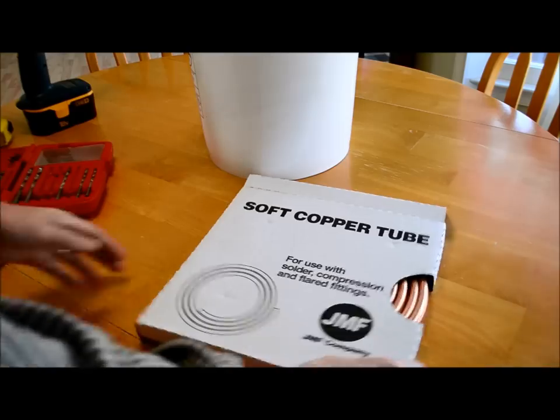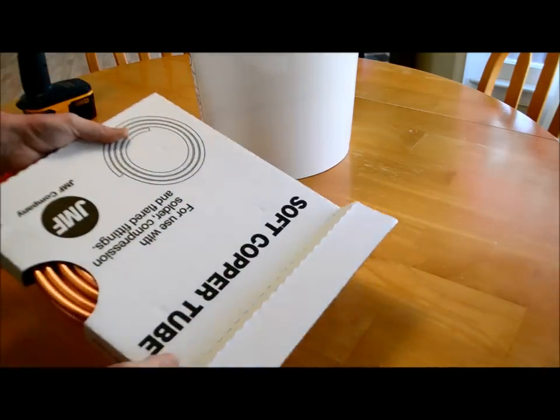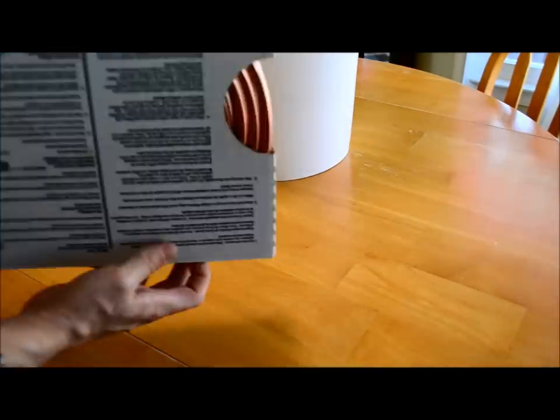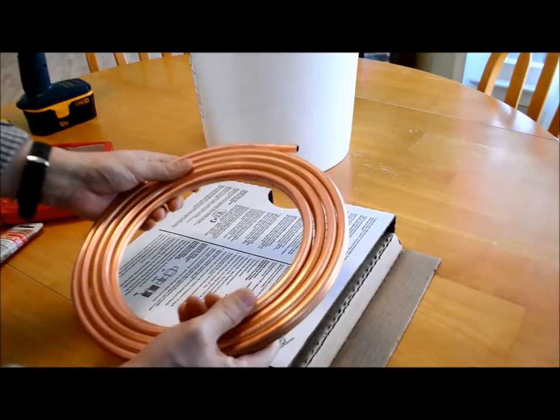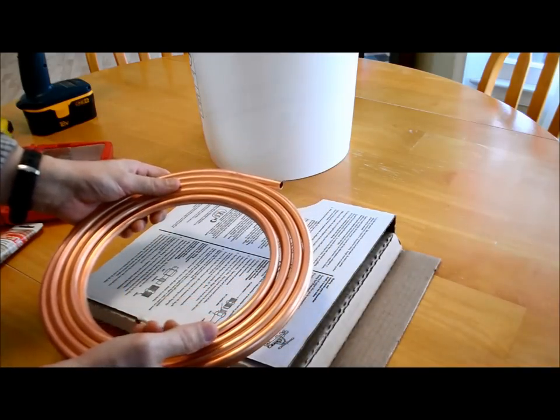I'll step you through it today. One of the first things you do is open up your copper tubing. Slide it out. The big thing with the copper tubing is it's very malleable. You can bend it by hand, but you've got to be very careful not to kink it.